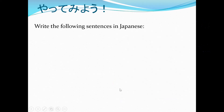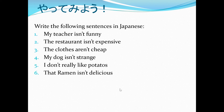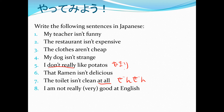Hopefully you've mastered じゃないです. So you can have a go here: My teacher isn't funny. The restaurant isn't expensive. The clothes aren't cheap. My dog isn't strange. I don't really like potatoes. That ramen isn't delicious. The toilet isn't clean at all. There's a little clause there — 'at all' — you need to put 全然 in front of the adjective, then じゃないです. And for 'don't really,' that's あまり, which also goes straight in front of the adjective. That's only used in negative sentences. So have a go and pause now so you can take your own time.